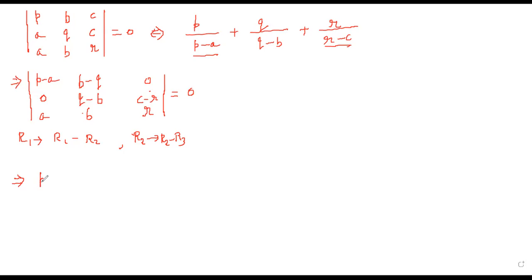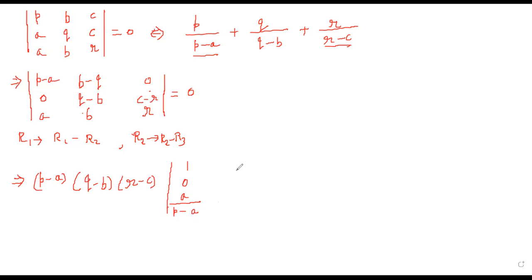Now if we take (p-a) common from the first column, (q-b) common from the second column, and (r-c) common from the third column: first column gives 1, 0, a/(p-a); second column gives -1 (since b-q over q-b = -1), 1, b/(q-b); third column gives 0, -1 (since c-r over r-c = -1), r/(r-c). This equals zero.